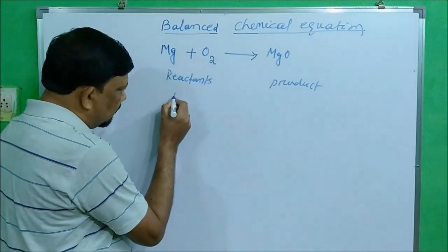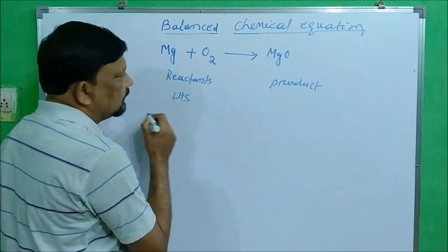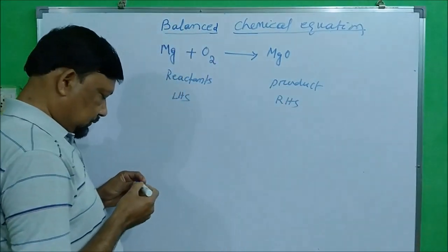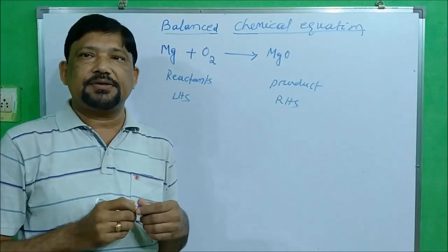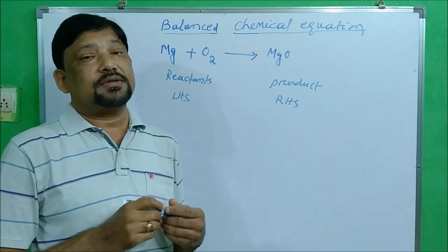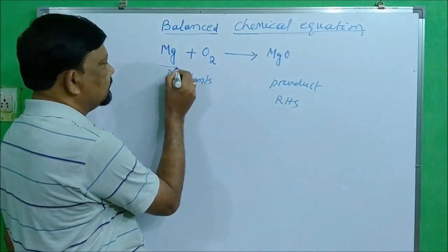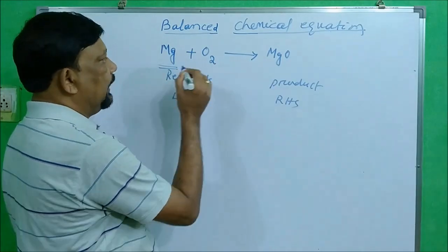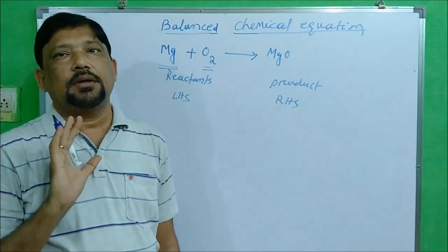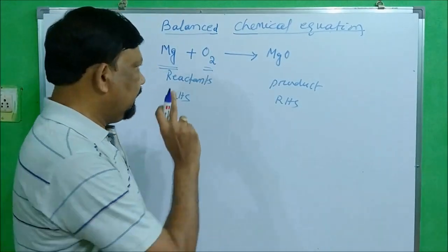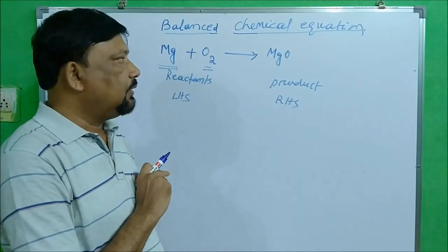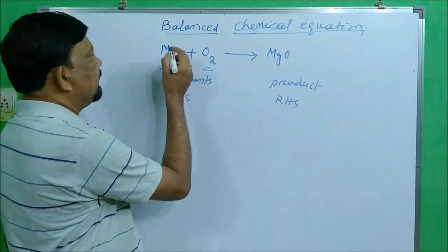The reactant side is called LHS and the product side is called RHS. To check whether this equation is balanced or not, you have to count the number of atoms of magnesium and the number of atoms of oxygen on both sides — whether they are equal or not. If equal, it is a balanced equation; if not equal, it is an unbalanced equation.